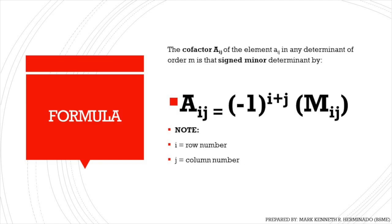So bago tayo mag-proceed sa example about cofactor, please take note that the cofactor of the element aij in any determinant of order m is that signed minor. aij is equal to negative 1 raised to i plus j times the minor, whereas i is the row number and j is the column number. So ito yung magiging formula natin for getting the cofactor. Please take note of that.